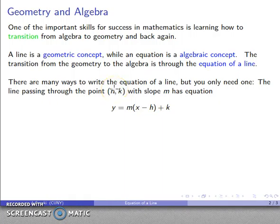Notice I have my x and y coordinates of the point on the line, h, k. I have the slope of the line, m, and there's my equation. And I don't really need to know anything else about how to write the equation of a line, because every other way of writing the equation for a line comes back to this one.